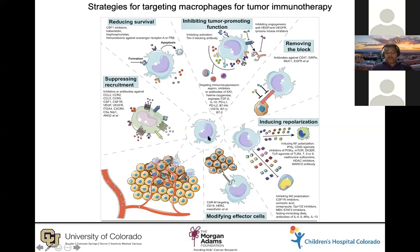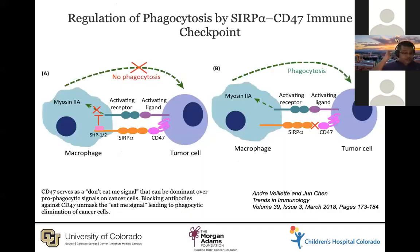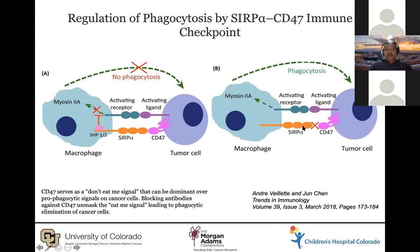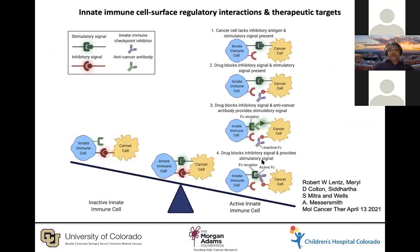These CAR macrophages modify effector cells to directly target and eat tumor cells. The phagocytosis checkpoint works as follows: CD47 acts as a 'don't eat me' signal by binding to SIRPα, which sends an inhibitory signal that prevents phagocytosis. If you block the CD47–SIRPα interaction, you activate phagocytosis and induce eating of tumor cells. You also need an activating 'eat me' ligand binding to an activating receptor on the macrophages.